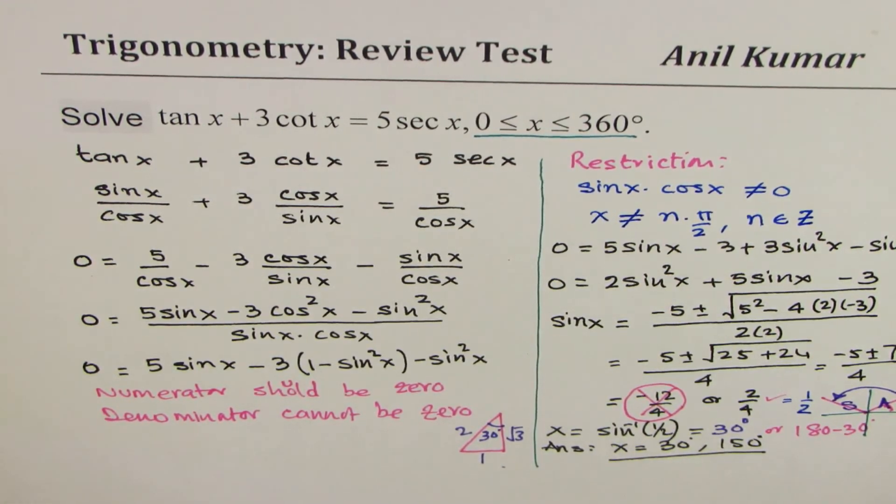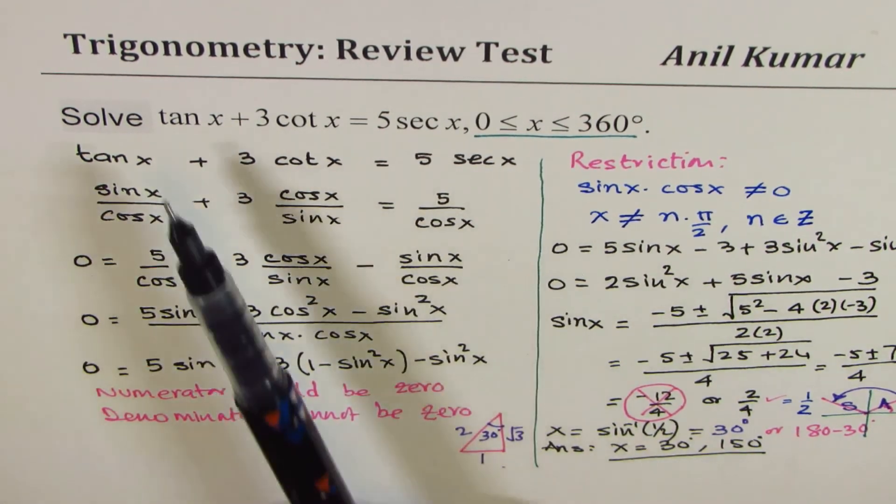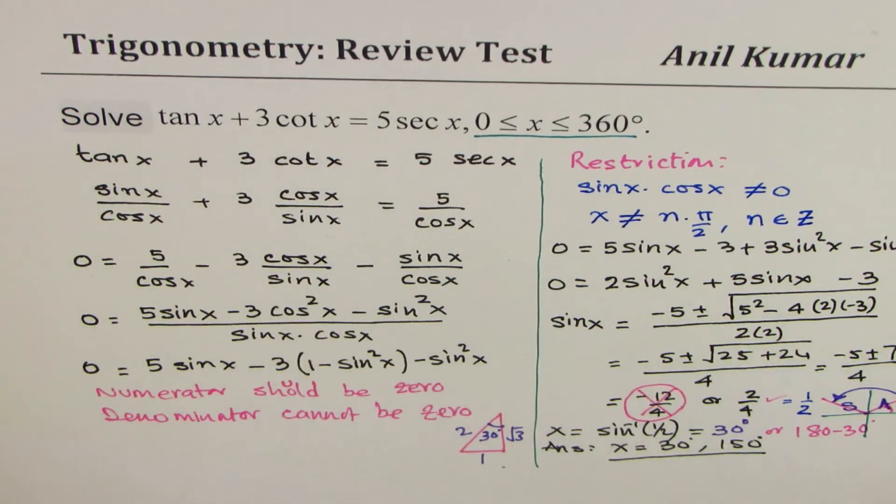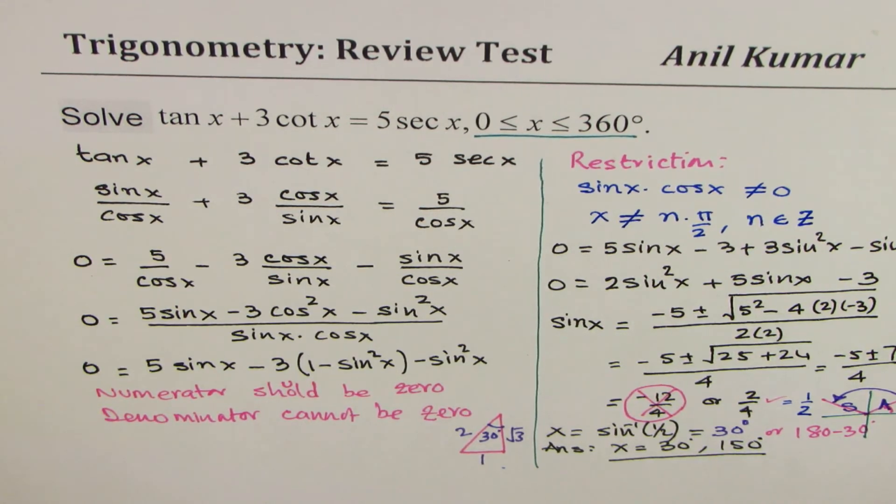So I hope the steps are absolutely clear. We first converted the secondary trigonometric ratios into their primary trigonometric ratios, basically sine and cosine, got an equation, quadratic equation in sine, solved for it, and found the valid solutions. I'm Anil Kumar, and I hope that helps. Feel free to provide your suggestions. And if you like and subscribe, that'd be great. Thank you, and all the best.